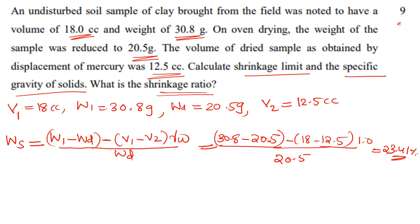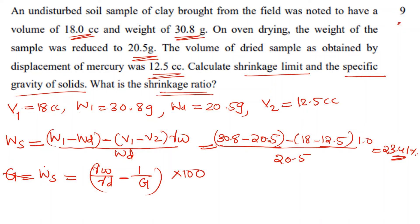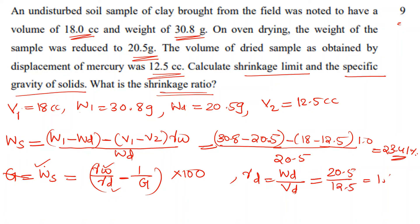For specific gravity G, the equation is: SL = (γw / γd − 1/G) × 100. We have the shrinkage limit and γd values. Given γd = 20.5 / 12.5 = 1.64 g/cc, we substitute into the specific gravity equation to solve for G.